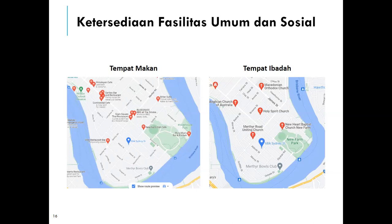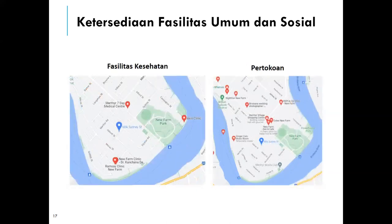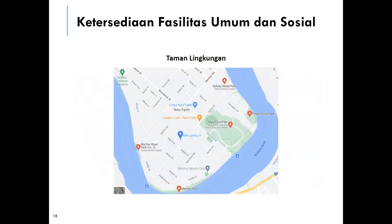Untuk aspek N, ketersediaan fasilitas umum dan sosial, sudah kami cek melalui Google Map. Yang pertama, untuk tempat makan di sekitar lokasi sudah cukup ada beberapa, walaupun tidak menyebar sepenuhnya. Untuk tempat ibadah, ada beberapa gereja juga. Untuk fasilitas kesehatan, masih kurang karena cuma ada beberapa klinik-klinik kecil dan tidak merata. Untuk pertokoan retail juga sudah cukup banyak. Yang terakhir ada taman lingkungan yang terletak di ujung-ujung jalan seperti itu.